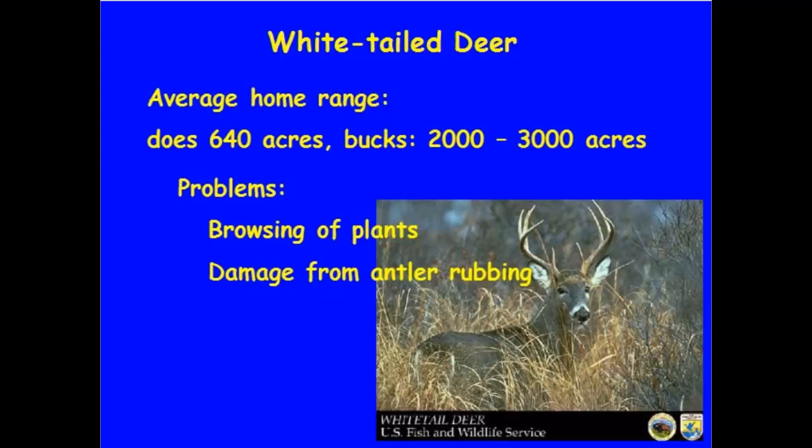White-tailed deer: you could look at the home range — the area in which that animal finds its food, water, and shelter. A doe is going to travel in about one square mile; bucks, several square miles. In most areas in Illinois, we're looking at linear type of habitat, so that 640 to 3,000 acres is spread out along a water course, a river, drainage ditches, those kinds of things. So deer move in a surprisingly large area, and it's something to consider when you're developing an IPM plan for white-tailed deer on your property.